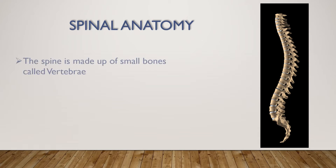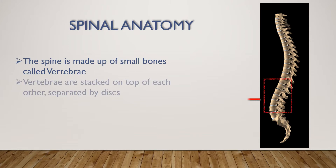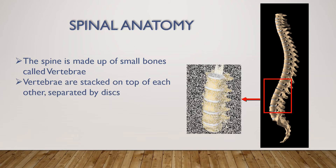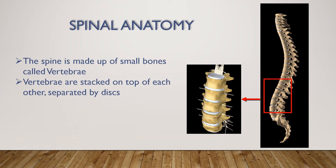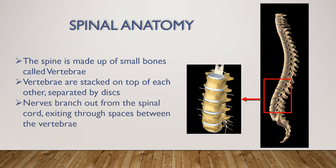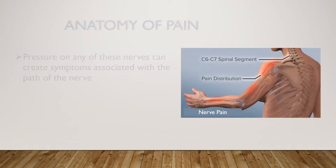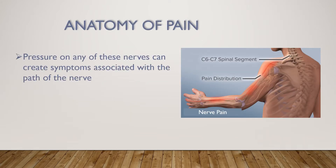The spine is made up of several small bones called vertebrae. These vertebrae are stacked on top of each other and are separated by discs, which are the shock absorbers between the vertebrae. Nerves branch out from the spinal cord and exit between each of the vertebrae through small spaces.